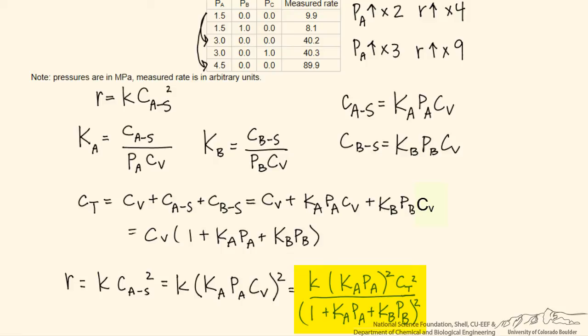That makes sense in terms of this model. Based on this proportionality, we have PA squared dependence. If the partial pressure of A is not largely covering the surface, so if this term is very small compared to the other terms, then we would expect to observe this kind of dependence on the partial pressure of A.